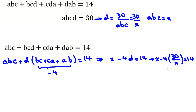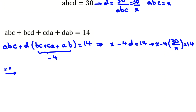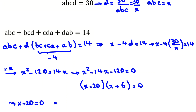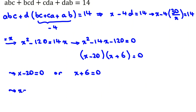Multiplying both sides by x gives x² - 120 = 14x, so x² - 14x - 120 = 0. I prefer to factorize: the product should be -120 and the sum -14. Placing -20 and +6 works, giving (x - 20)(x + 6) = 0. So x = 20 or x = -6.